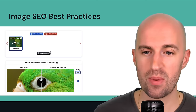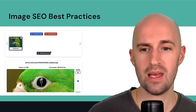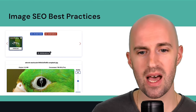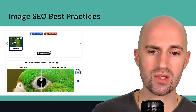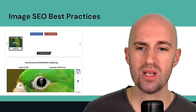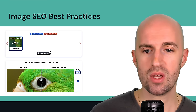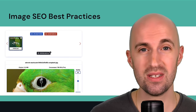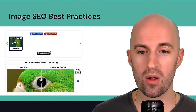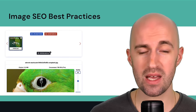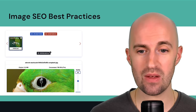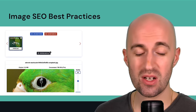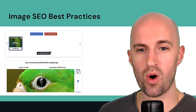Here's an example using imagecompressor.com: I uploaded an image of a parrot and slid the quality slider down to about 66. You can see the comparison between the original and compressed version — it saved 71% in file size while pretty much preserving the quality. I can't really see any noticeable difference between the two, so it really helps save file size without sacrificing quality.